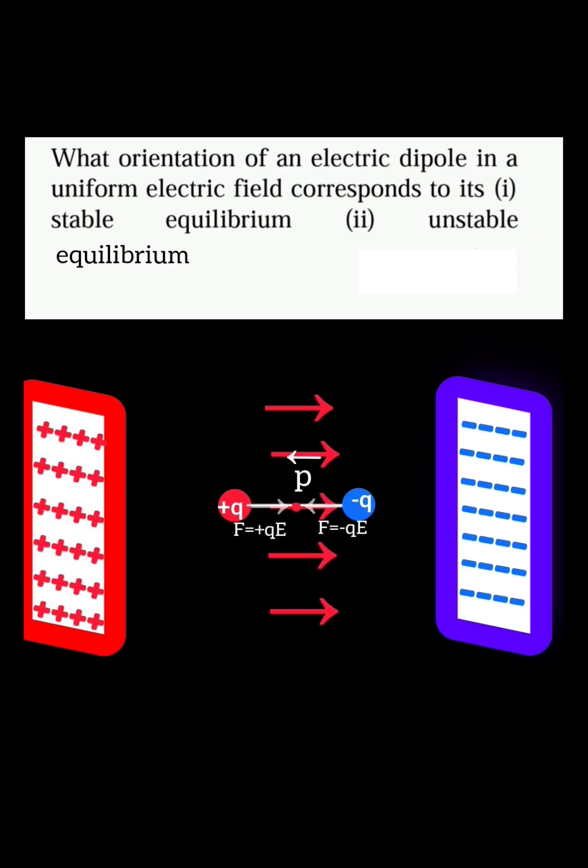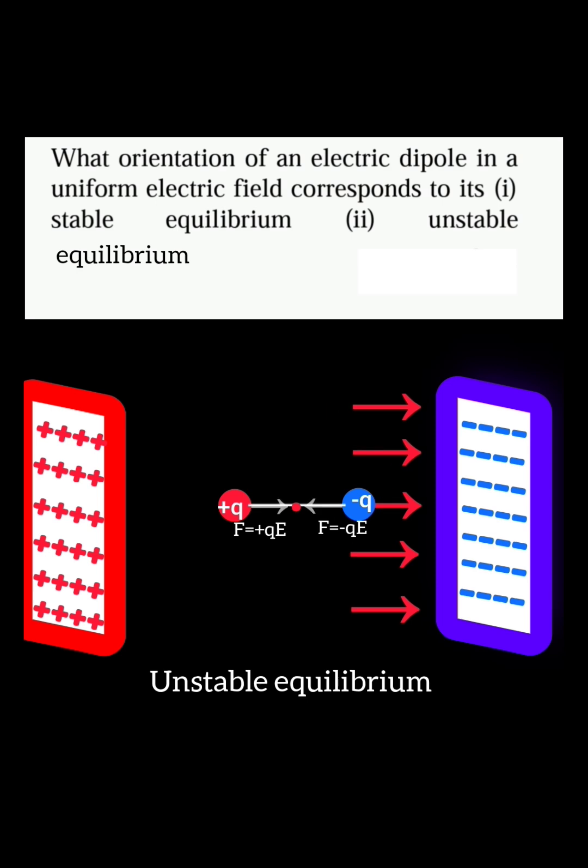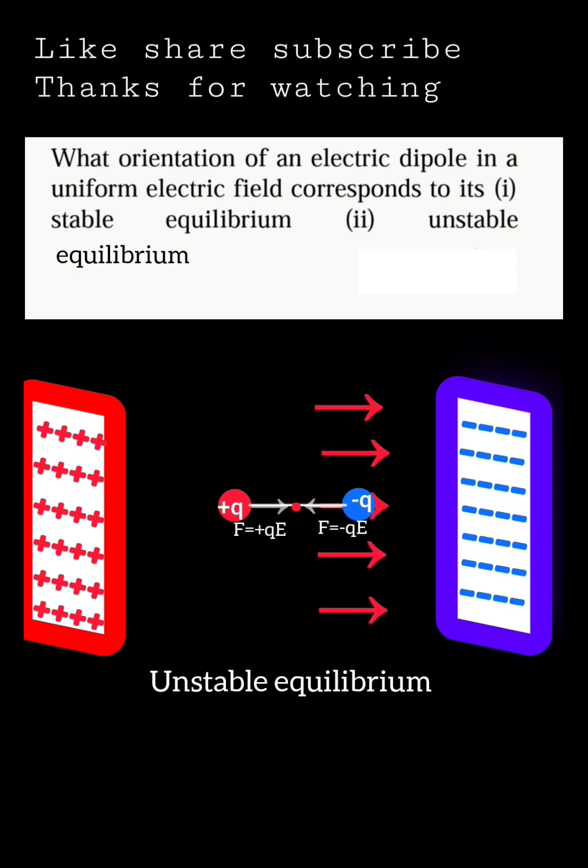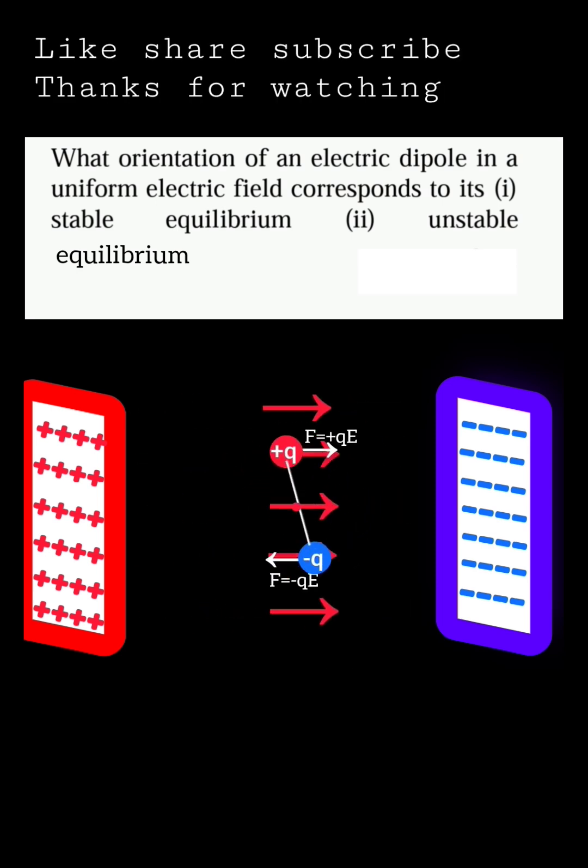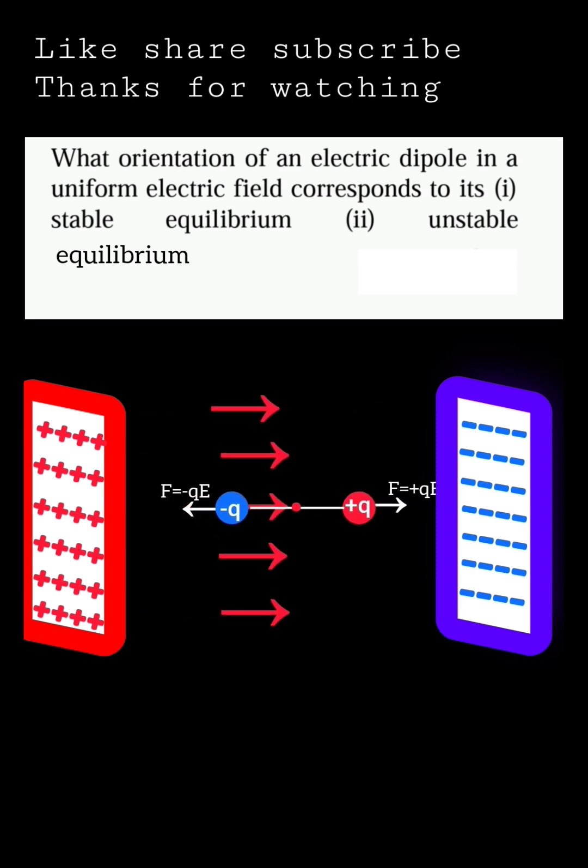In this case, the forces on the dipole are equal in magnitude, acting in opposite directions but towards each other, which makes the dipole unstable equilibrium. If we displace the dipole angularly, it won't go back to its original position. It will rotate and acquire the equilibrium position.